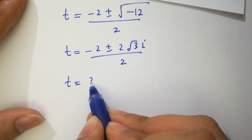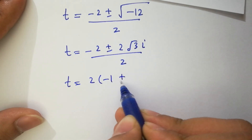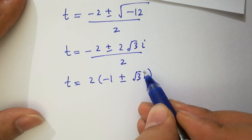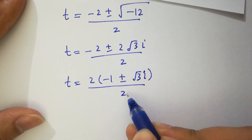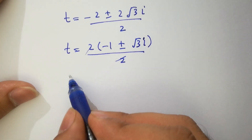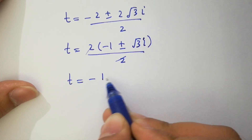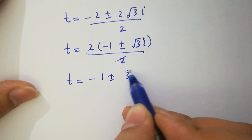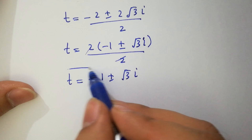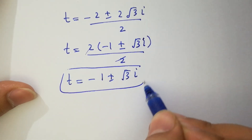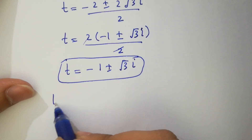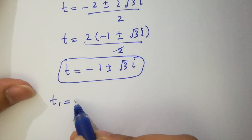Since square root of minus 12 equals 2√3 i, we have t equals (minus 2 plus or minus 2√3 i) over 2. Factoring out 2, t equals minus 1 plus or minus √3 i. So this also gives two complex solutions.